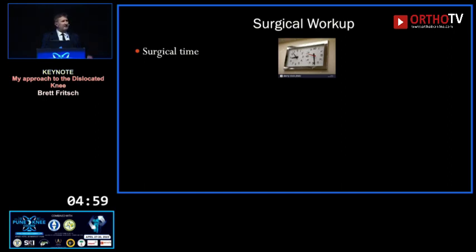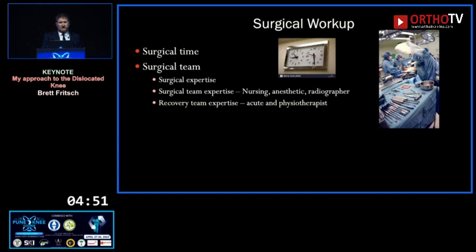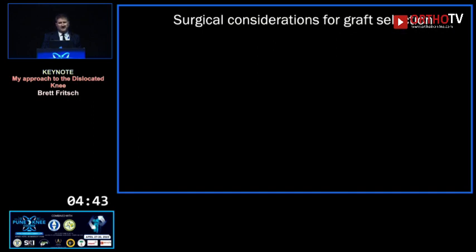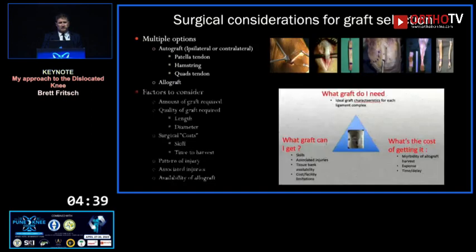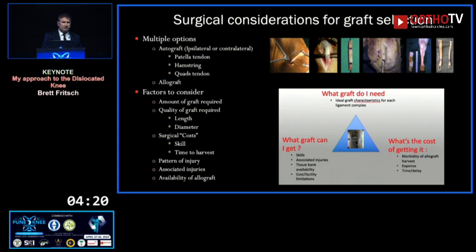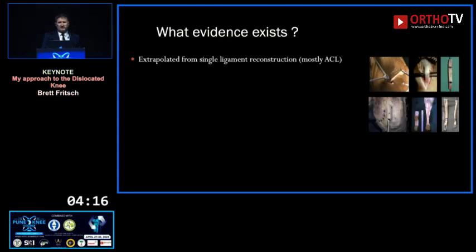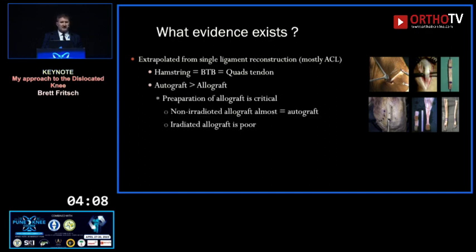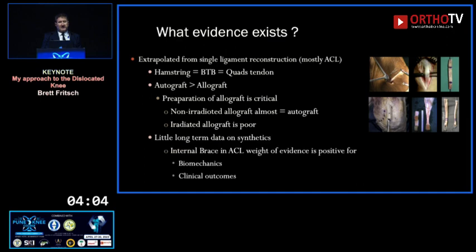In theatre, you want everything right — sufficient surgical time, a team that knows exactly what they're doing (nursing, anaesthetic, radiographer), a good recovery team, and the right equipment including graft tissue. For grafts, consider: what graft do you need in terms of size; what graft can you get given other soft tissue injuries; and what's the cost — financial, time, skill, or increased trauma to the patient. All autograft options work well; autograft tends to be better than allograft. If using allograft, make sure it's non-irradiated.